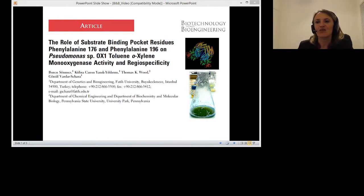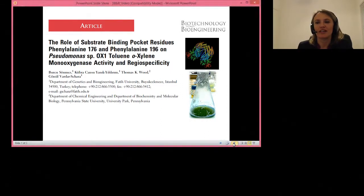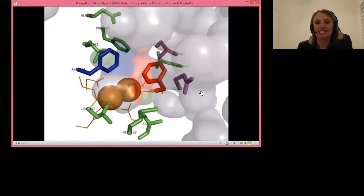ToMO residues phenylalanine-176, shown here in red, and phenylalanine-196, shown in blue, locate in the substrate binding pocket and both are conserved in all other related toluene monooxygenases.